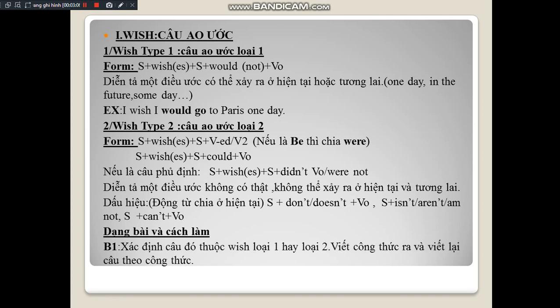For the exercise types and how to solve them: Step 1 - identify whether the sentence is a Type 1 or Type 2 wish clause, write out the formula, then rewrite the sentence according to the formula. Step 2 - convert negative sentences to affirmative and vice versa. Another case is conjugating the verb in brackets.